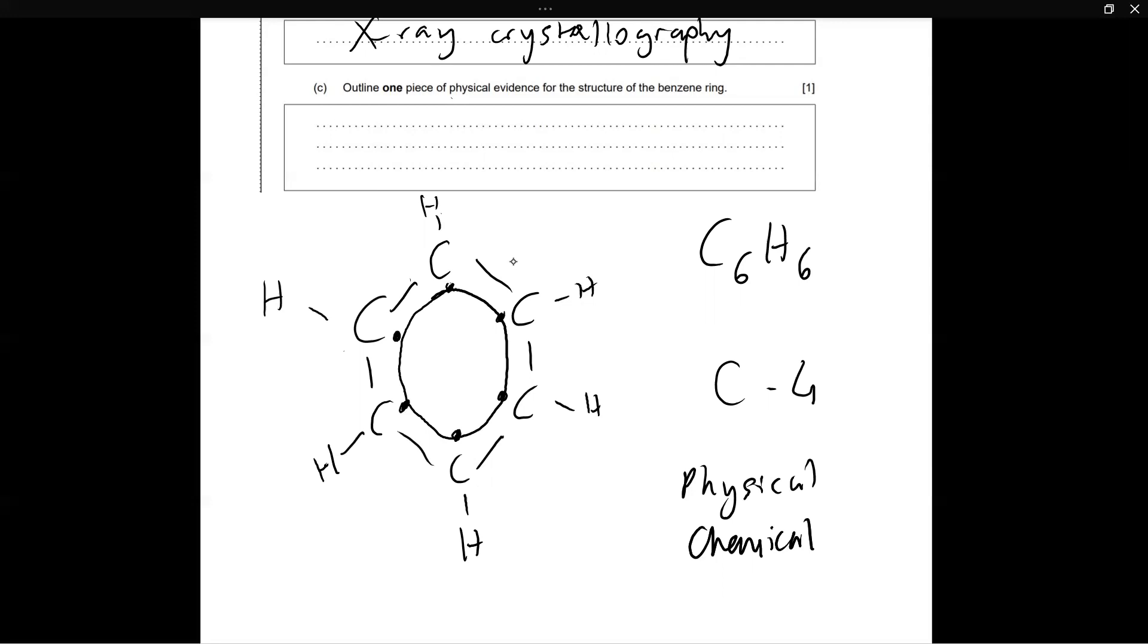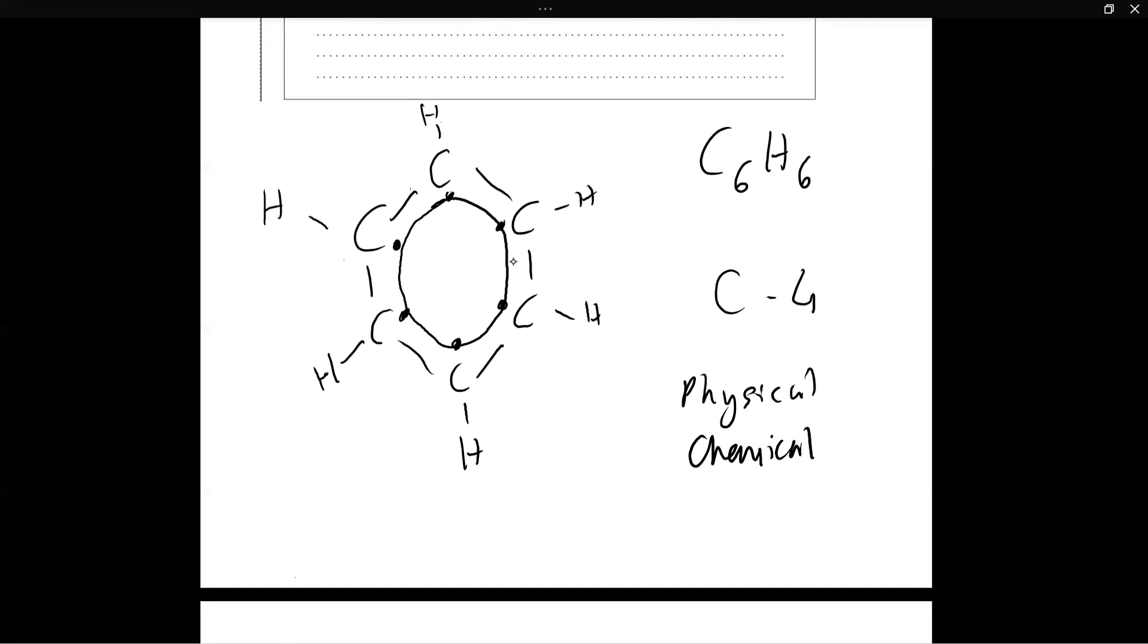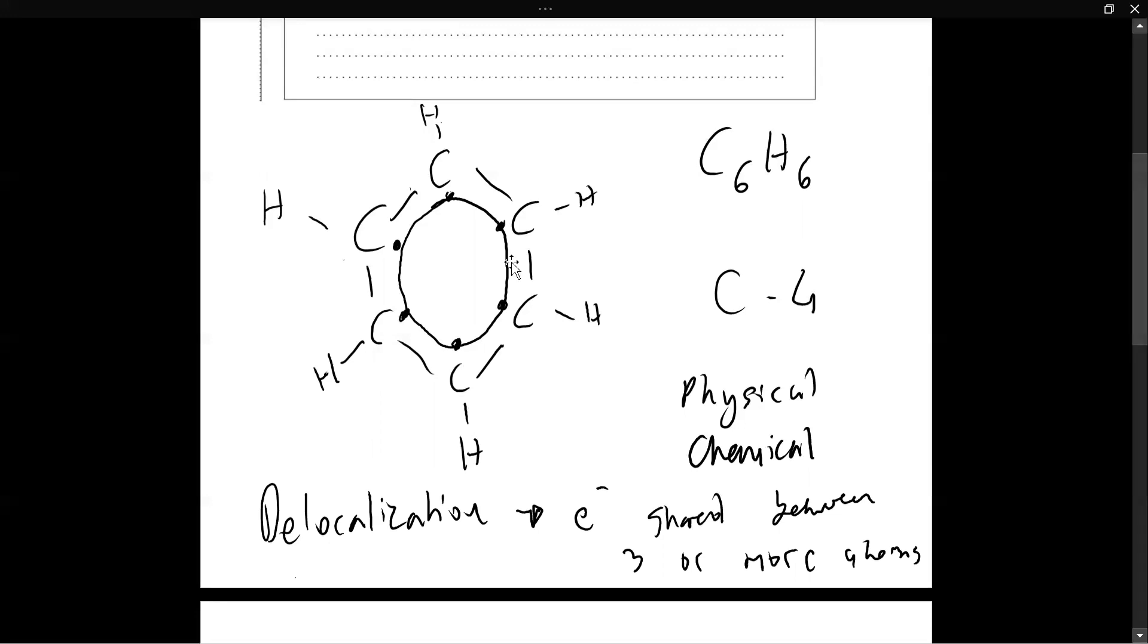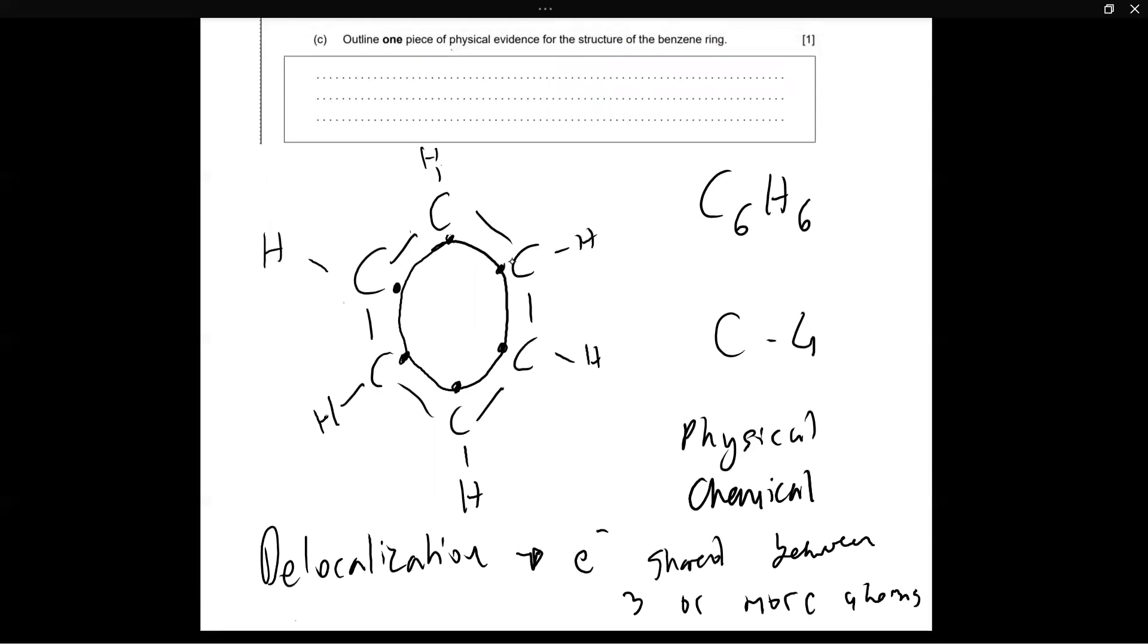And what does that mean? A delocalized ring is basically a system of electrons which are shared between three or more atoms. So these six electrons are not confined to this double bond or this double bond or this double bond, rather they're shared between each and every single one of the six carbon atoms. And each carbon atom contributes one electron to it. And these six electrons help to maintain the stability of the benzene structure. And instead of the electrons, like I said before, just being confined between a double bond, they are now spread over and shared between the six carbon atoms.